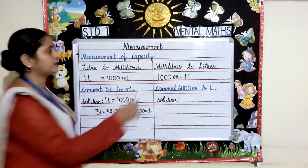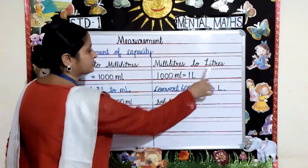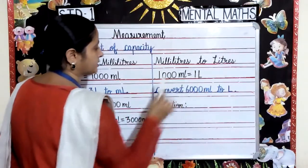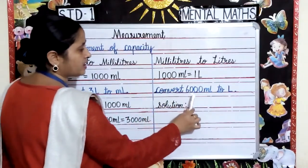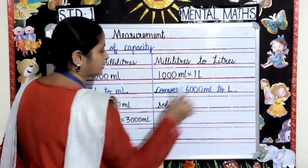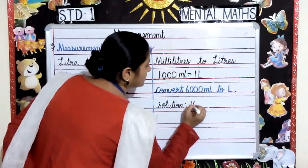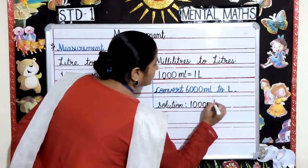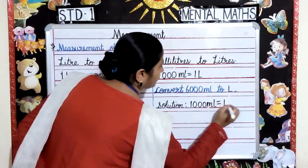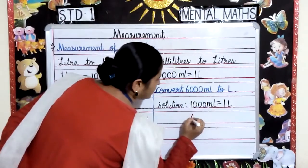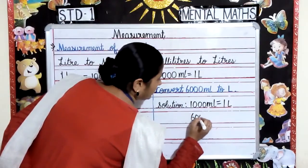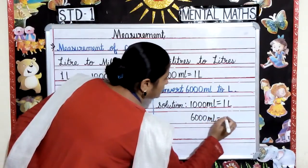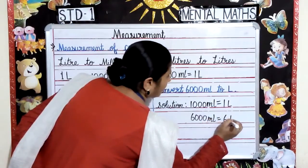Now let's convert milliliters to liters. 1000 milliliters is equal to 1 liter. Here we have to convert 6000 milliliters to liters. Solution: 1000 milliliters is equal to 1 liter. So 6000 milliliters is equal to 6 liters.